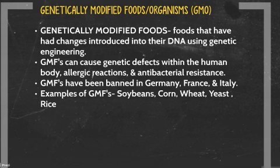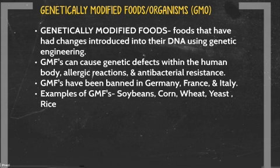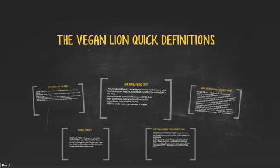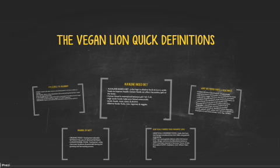Examples of GMOs include soybeans, corn, wheat, yeast, and rice, which are all huge cash crops in the United States. Thanks for watching my YouTube presentation. I hope it was helpful in understanding some vegan and food definitions. Please subscribe to my YouTube channel, The Vegan Lion. Until next time, I wish you great health and happiness.